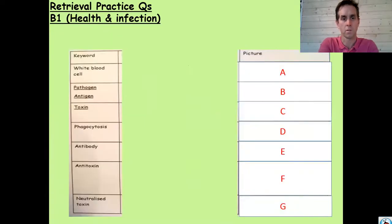And the final set of questions, which is also B1, Health and Infection, is here. This is what we did last lesson. And all I'm looking for you to do is draw the picture that we drew for each of those keywords last lesson. If you can pause and retrieve now.